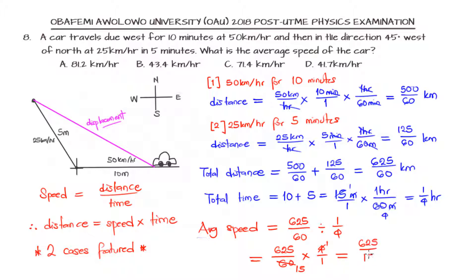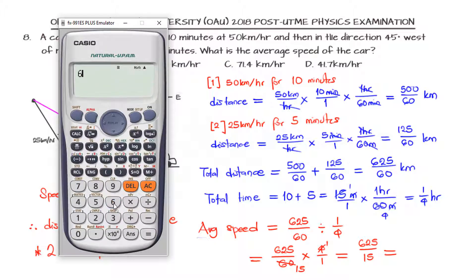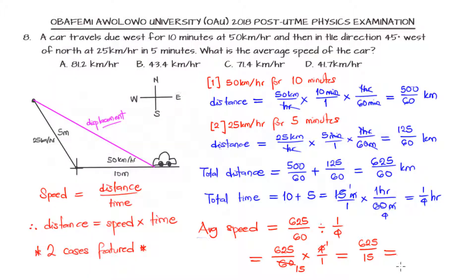So we have 625 over 15 kilometers per hour. We bring in our calculator: 625 divided by 15, that will be 41.67 or 41.7 kilometers per hour. So the correct option for us is option D. That is the right answer.